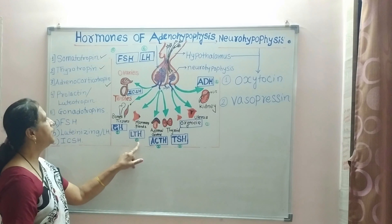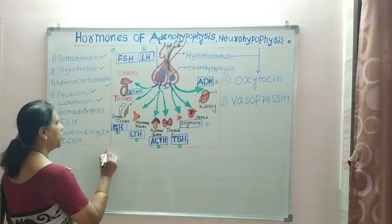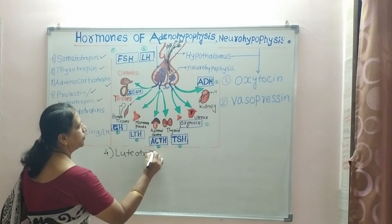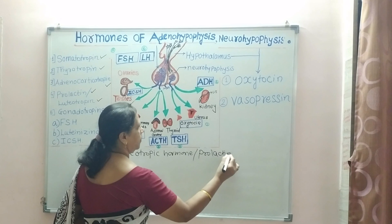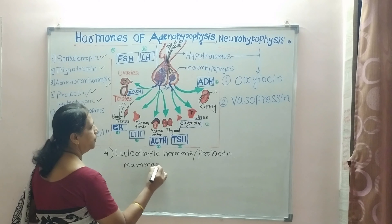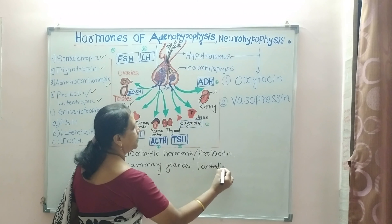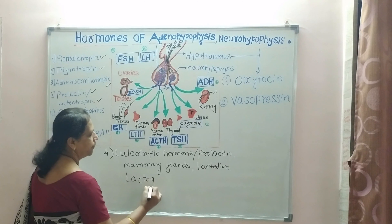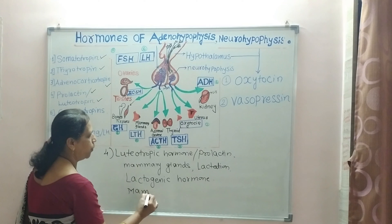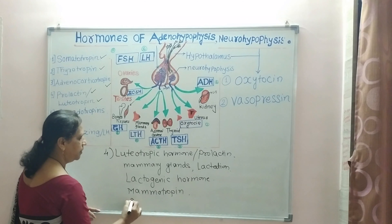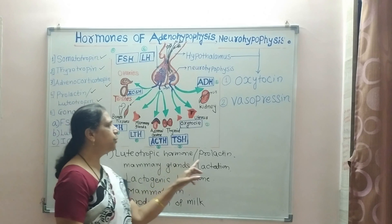The fourth hormone is LTH, also called prolactin, luteotropin, or luteotrophic hormone. It stimulates the mammary glands during pregnancy and plays an important role in parturition and lactation. Because it helps in lactation, it is also called lactogenic hormone, and because it stimulates mammary glands, it is also known as mammotropin. It helps in the production of milk.